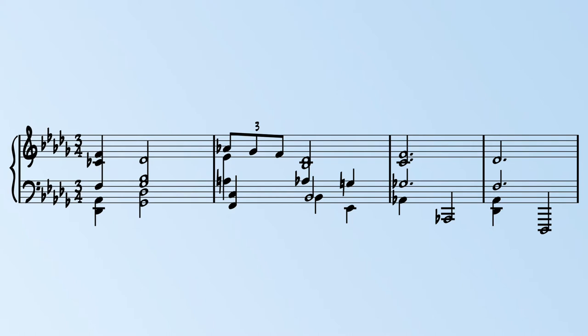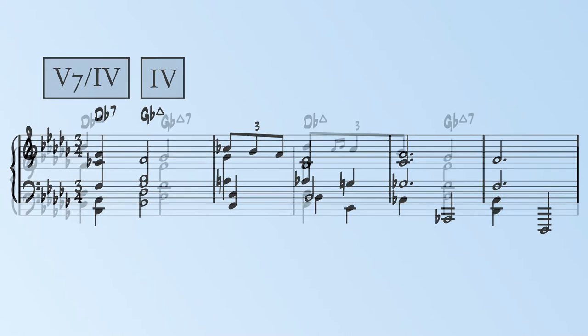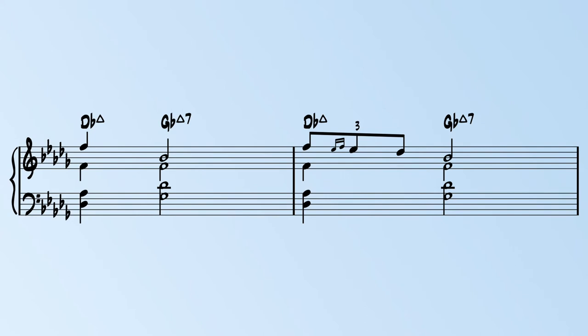Alright, so we're in the key of Db major, but it isn't until the final measure of this passage that we actually hear the I chord. This is because the Db chord we hear initially is Db7. With Gb major appearing on beat 2, we can confidently label Db7 as a V7 of 4, and Gb major as 4. This is very similar to the opening measures, only they sound Db major as a triad progressing to Db major 7.